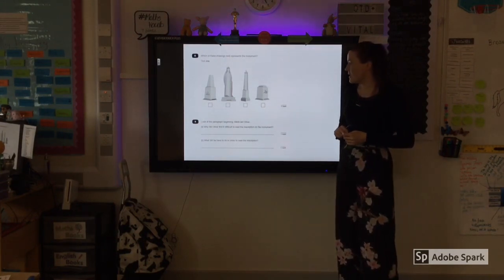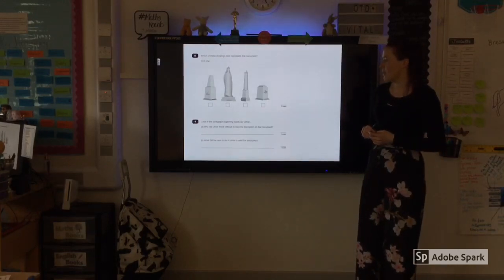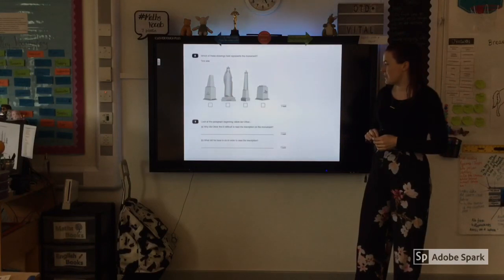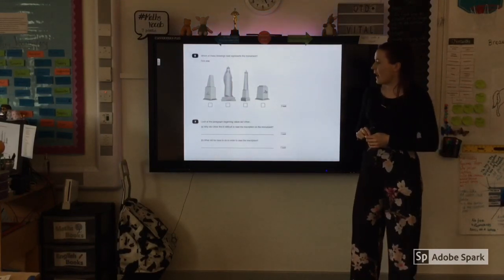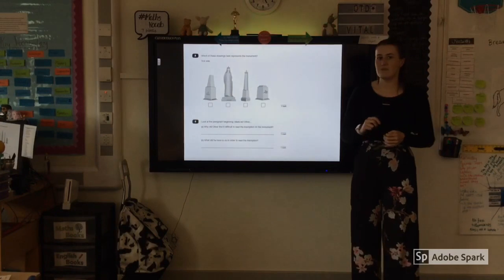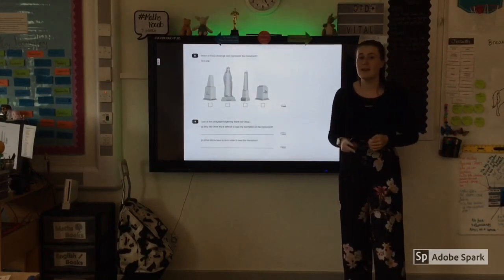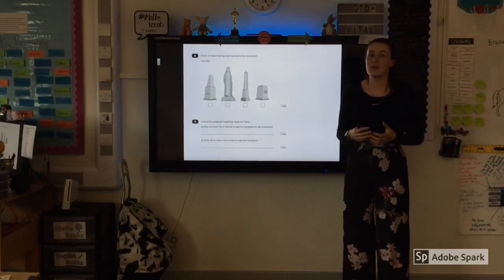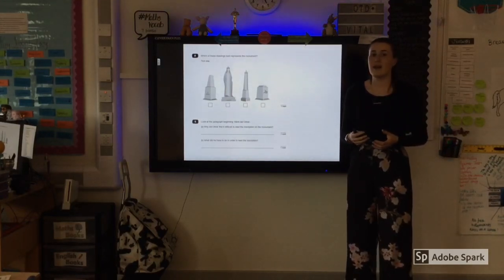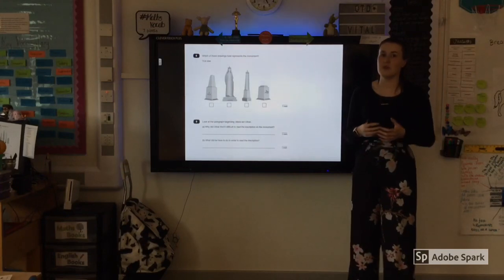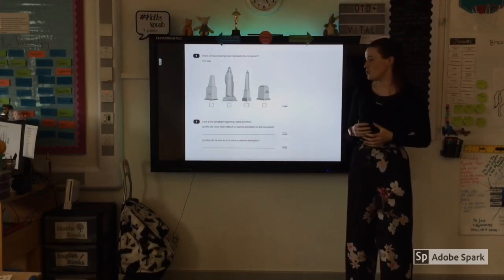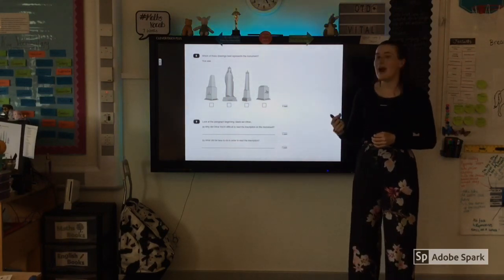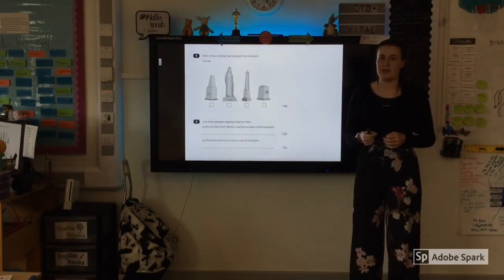Question number nine. Look at the paragraph beginning, Maria led Oliver. It is a two part question. Why did Oliver find it difficult to read the inscription on the monument? And what did he have to do in order to read the inscription? Now, the reason they have used the word inscription twice there is because it is quite a difficult word. Don't be thrown off if you don't know the meaning of that word. All it is asking you to find out is why it was difficult for him to read it. But you need to make sure that you don't write the same answer twice. It is why could he not read it? And then what did he do to help him read it? Two different answers.